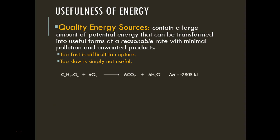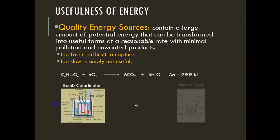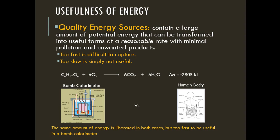Here is an equation for the combustion of glucose. We can combust glucose in several ways: burn it in a calorimeter or eat food and process it in our bodies. The carbon dioxide released in this reaction is the source of the CO₂ we exhale. If we combust one mole of glucose, the same amount of energy is released whether in the calorimeter or the body. In the calorimeter it's released too fast to be useful, whereas in the human body it's released slowly enough for us to use.